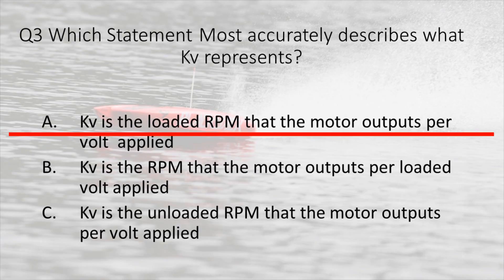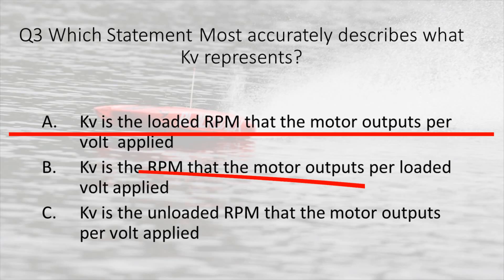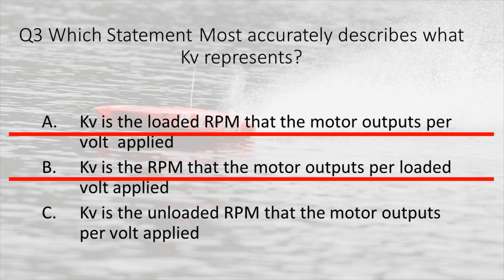Answer two: KV is the RPM output of a motor based on the voltage that we input. This cannot be true because if a motor manufacturer specified KV values knowing what voltage you are going to apply, that would be essentially impossible. Answer C: KV is the unloaded RPM for every volt that we apply to the motor. This is our correct answer. This is exactly what KV is.